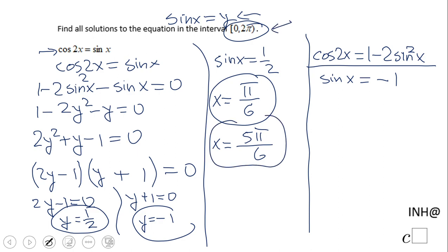These are the two times where the sine is one half in zero to 2π. Now what about the second one? When I look at the unit circle, when sine of x equals negative 1, that is just going to be at 3π over 2.